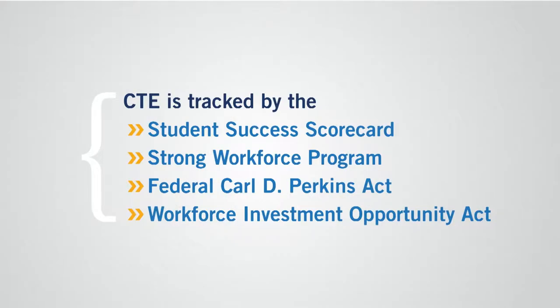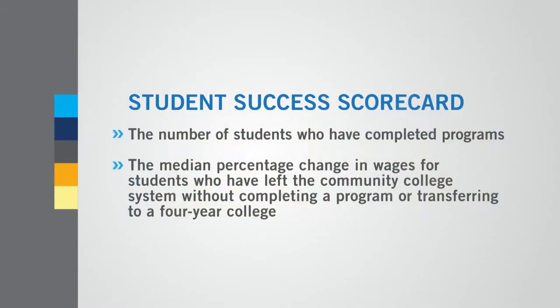CTE is accountable to multiple systems that monitor outcomes, tracked by the Student Success Scorecard, the Federal Carl D. Perkins Act, the Strong Workforce Program, and the Workforce Investment Opportunity Act, or WIOA for short. Let's touch on each of these individually, starting with the most familiar: the System-wide Student Success Scorecard. The Scorecard allows us to track progress in key areas for all community college students, and it also includes two CTE measures. The first reports the percentage of students who completed programs, and the other reports the median percentage change in wages for students who left the community college system without completing a program or transferring to a four-year college. This second measure helps us gauge to what extent even some coursework can impact a student's earning ability. This second group is known as Skill Builder.